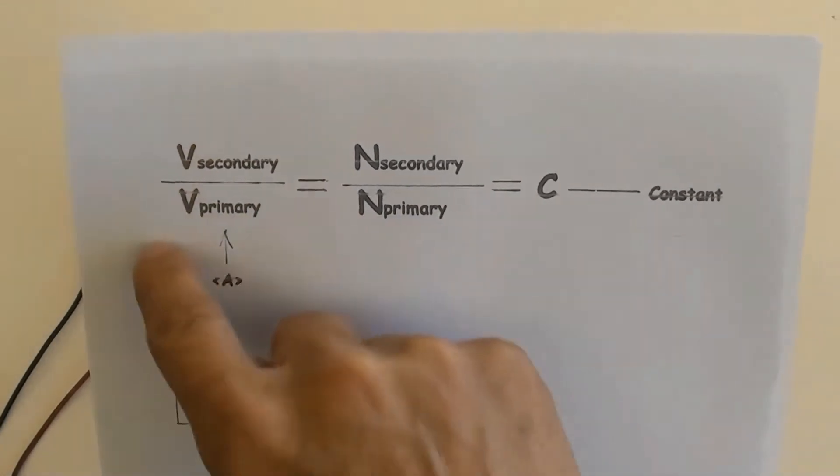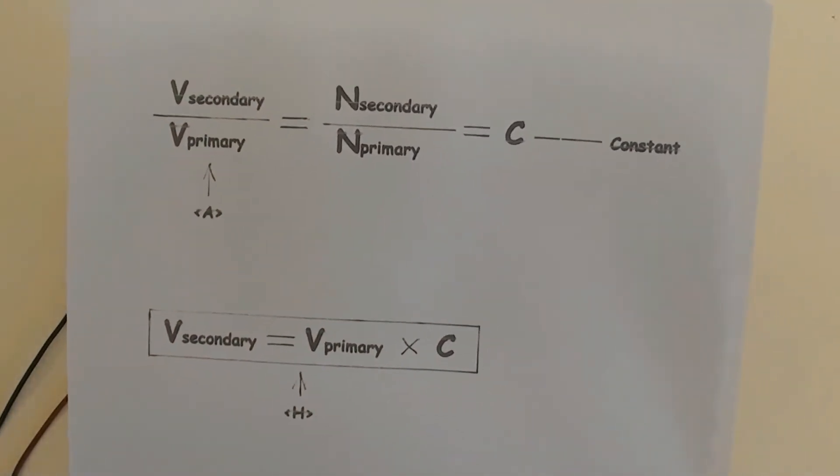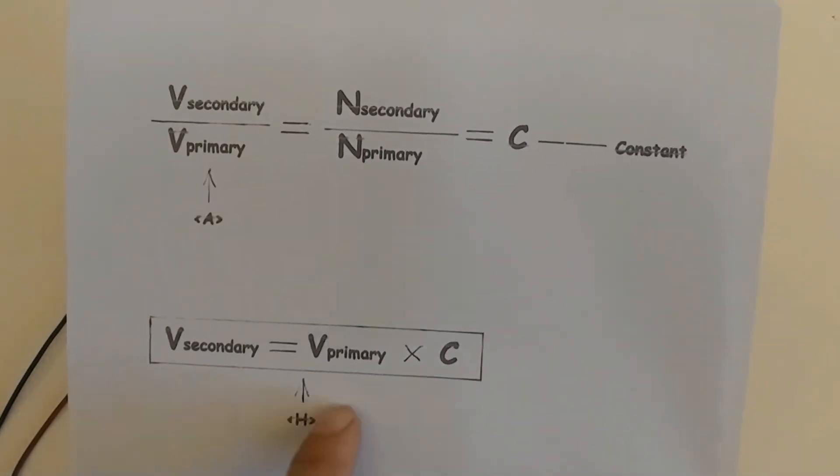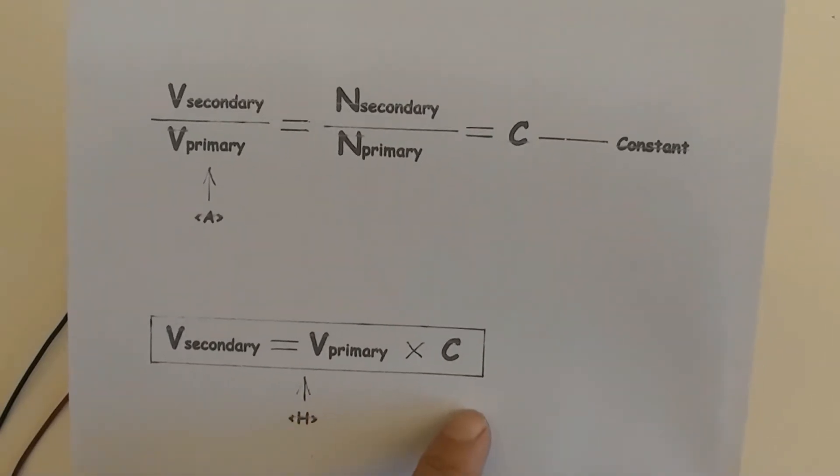From this formula, we get the result that V secondary equals V primary times C.